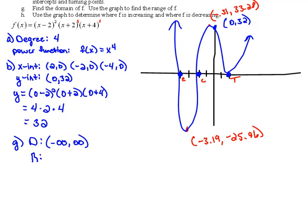And based on the graph, we can find the range. Our lowest y value is this negative 25.96. And because that is a valid point, we can use a bracket.